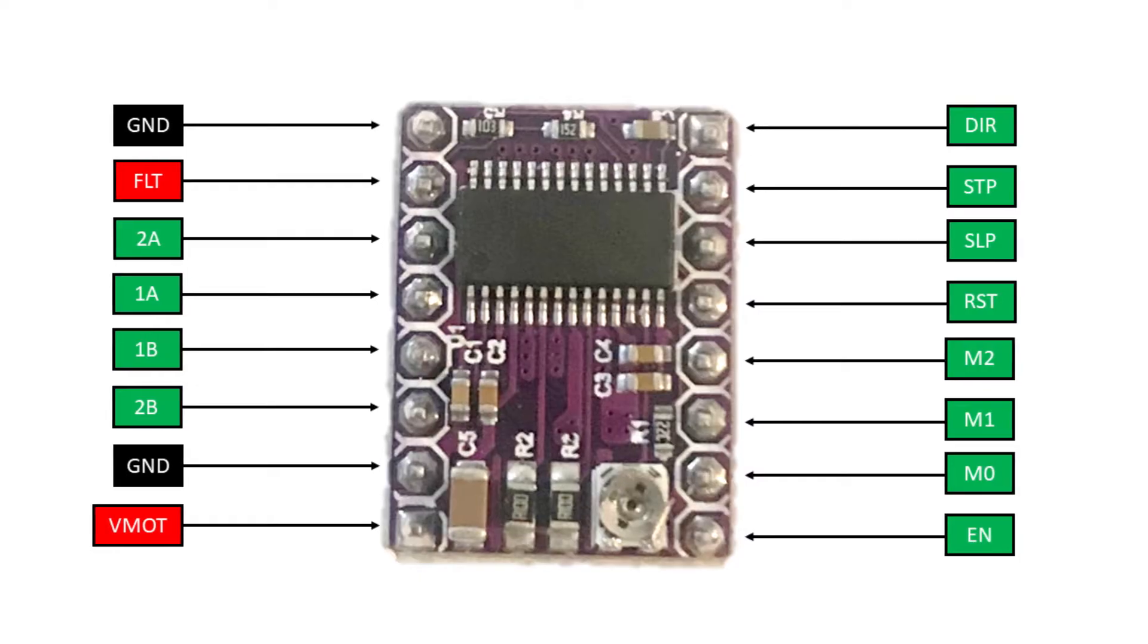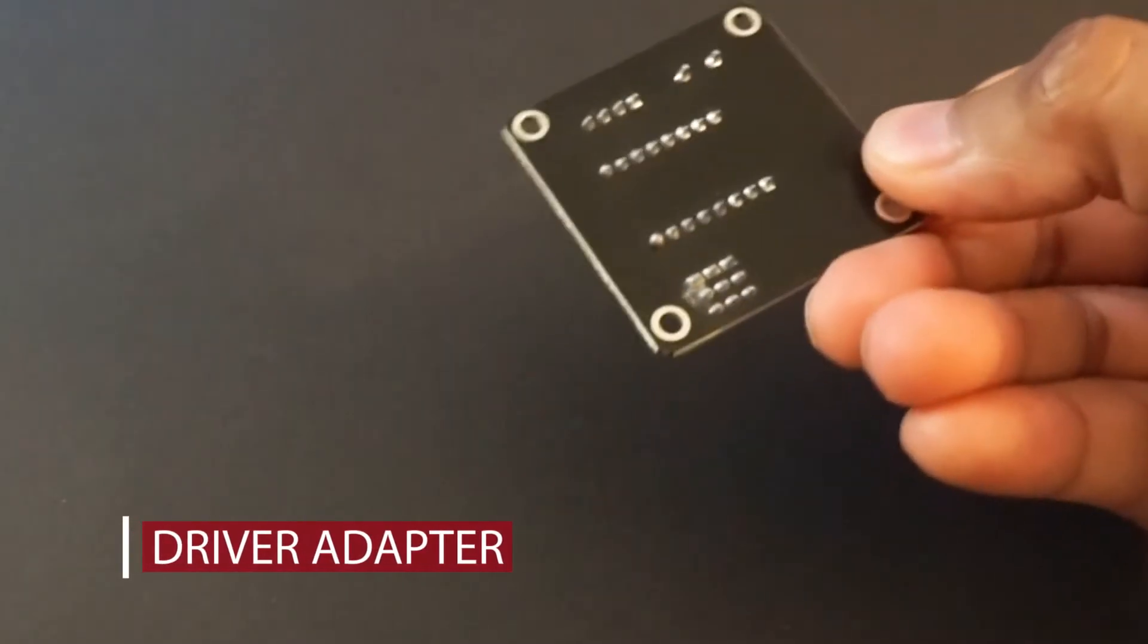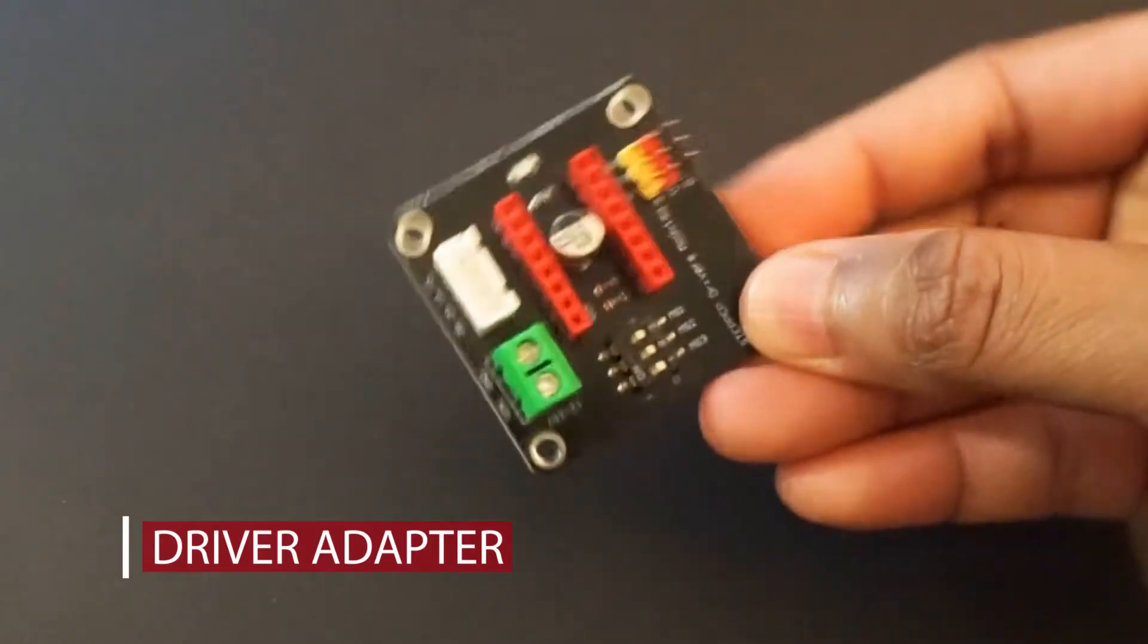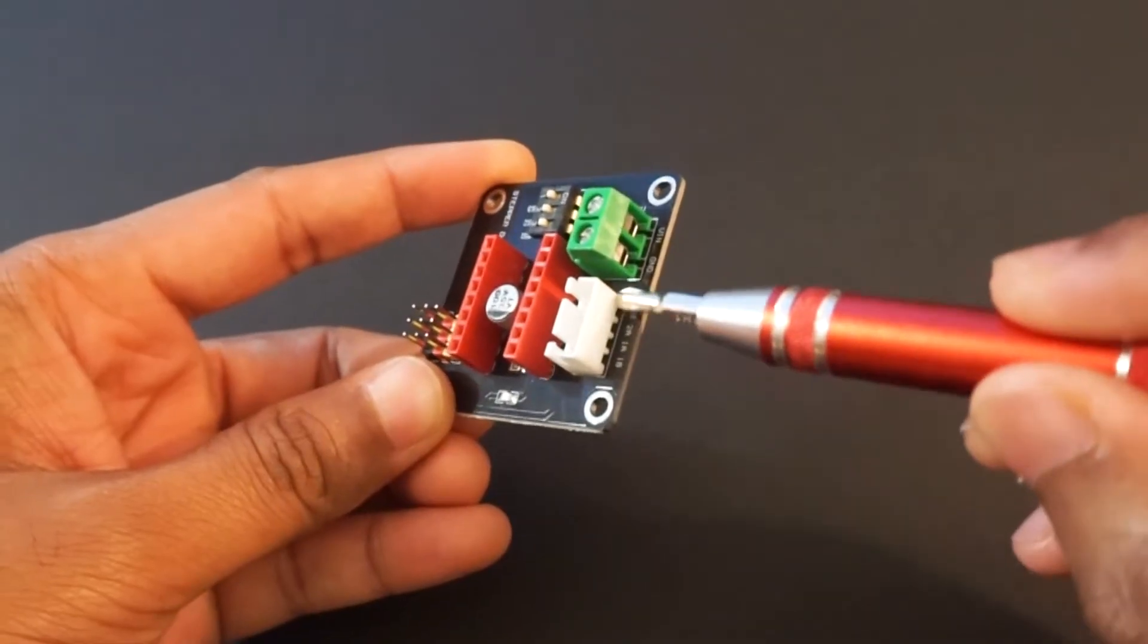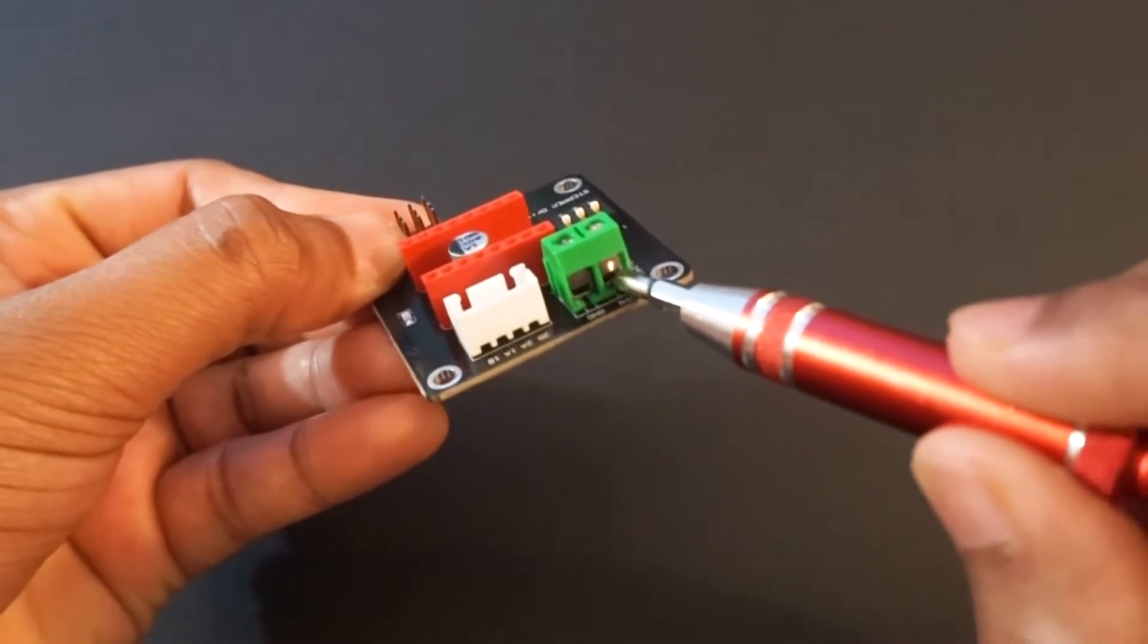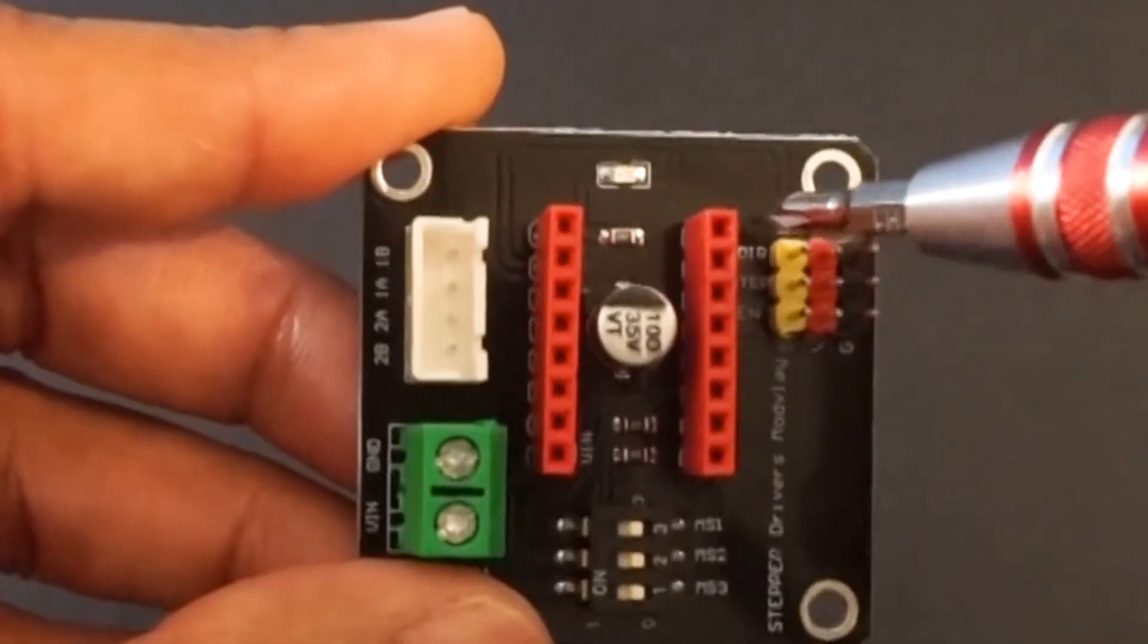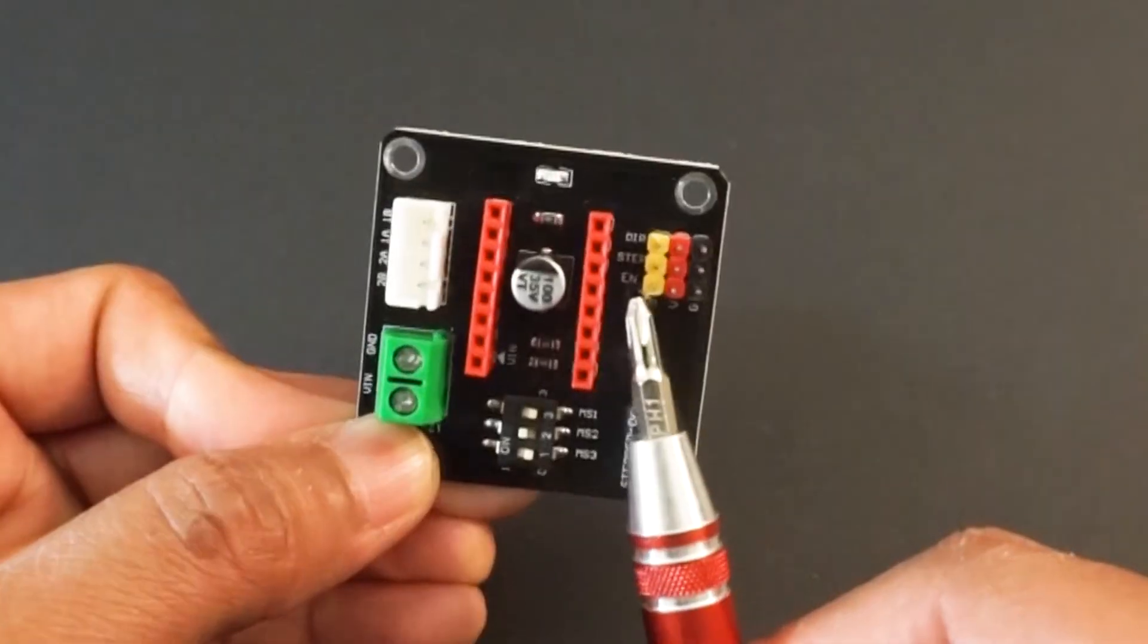We will use the driver adapter so that DRV8825 driver can be easily mounted on it. This adapter has following pins: stepper motor wire pins where we need to connect stepper motor, main power supply pins to be provided to stepper motor, direction and step pins through which we can control the stepper motor speed and direction. It also has enable pin which should be connected to ground to enable the driver.